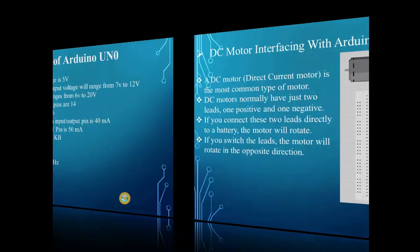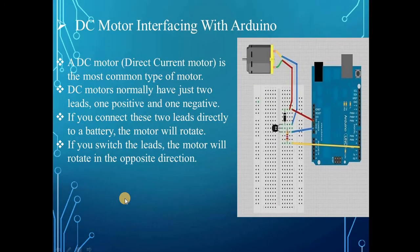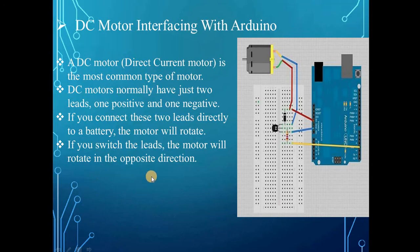The next point is DC motor interfacing with Arduino. The figure on the right illustrates DC motor interfacing with Arduino. A DC motor — direct current motor — is the most common type of motor. DC motors normally have just two leads: one positive and one negative. If you connect these two leads directly to a battery, the motor will rotate. If you switch the leads, the motor will rotate in the opposite direction.